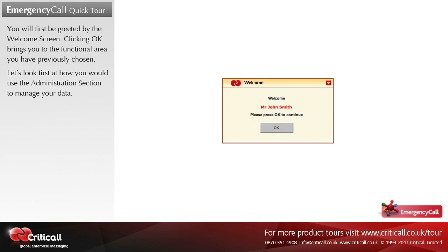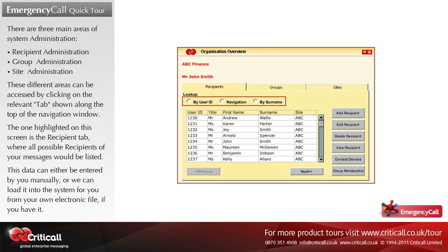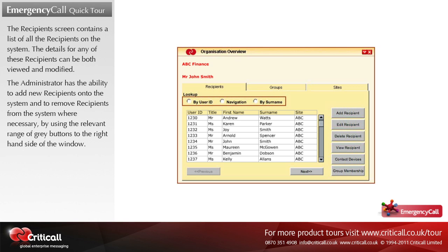Let's look first at how you would use the administration section to manage your data. There are three main areas of system administration: recipient administration, group administration, and site administration. These different areas can be accessed by clicking on the relevant tab shown along the top of the navigation window. The recipient tab is where all possible recipients of your messages would be listed. This data can either be entered manually or loaded into the system from your own electronic file. The recipient screen contains a list of all recipients; their details can be both viewed and modified. The administrator has the ability to add new recipients or remove recipients using the relevant gray buttons on the right-hand side.